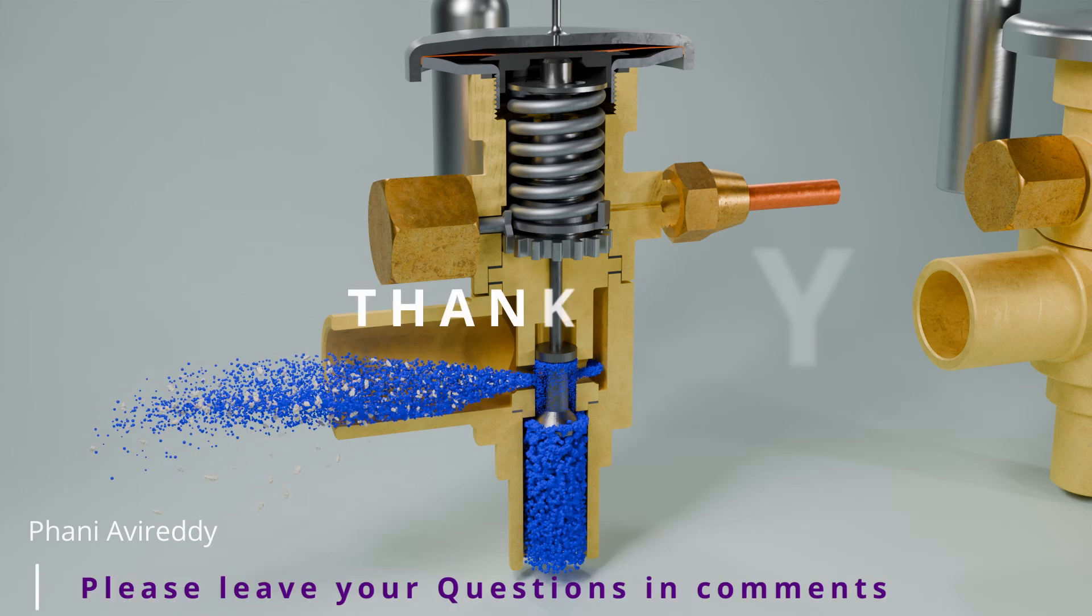In the next part of this video series, we'll explore how the refrigerant flows through the evaporator and undergoes phase change. We will also break down key concepts like superheat and the purpose of the equalizing line, complete with animations to make these topics easier to understand. So don't forget to subscribe and hit the notification bell to stay updated on our upcoming videos. Thanks for watching and we'll see you in the next one.